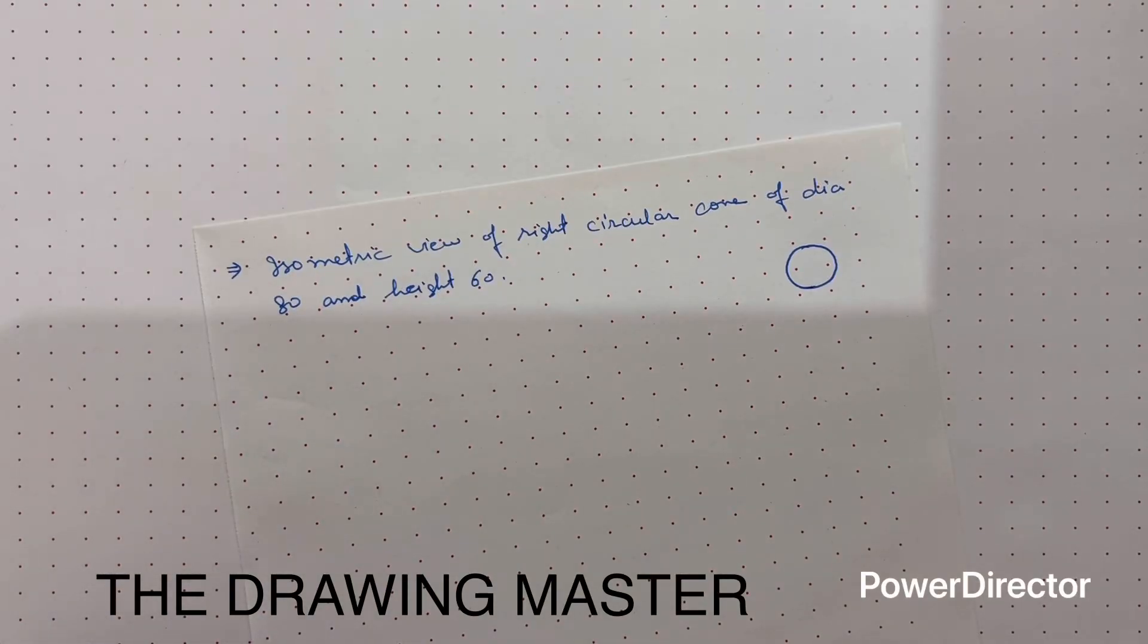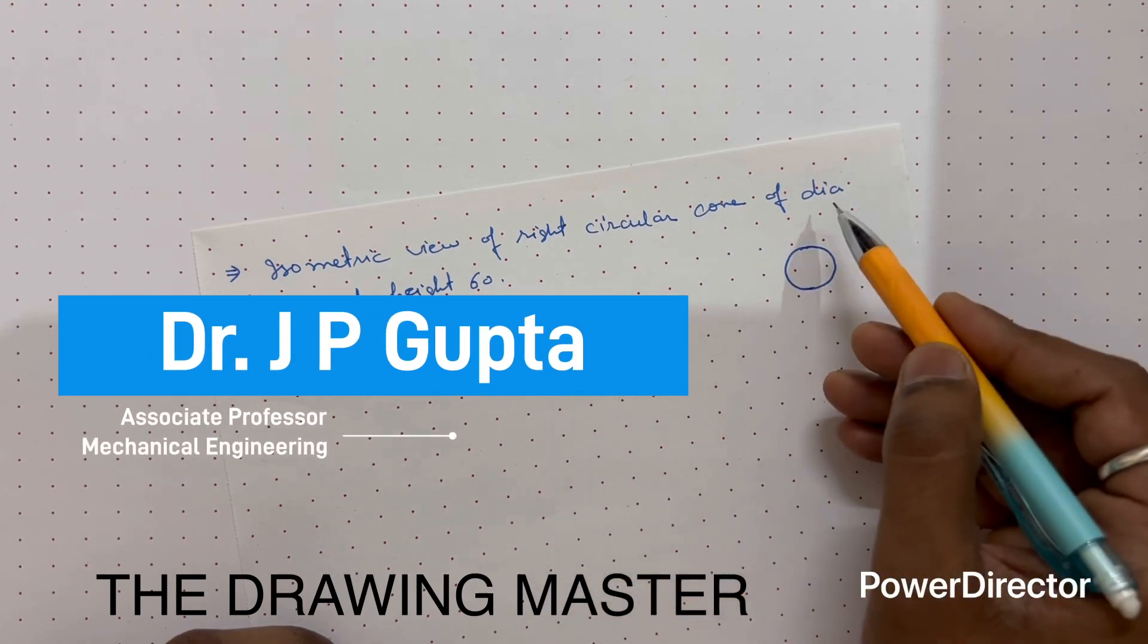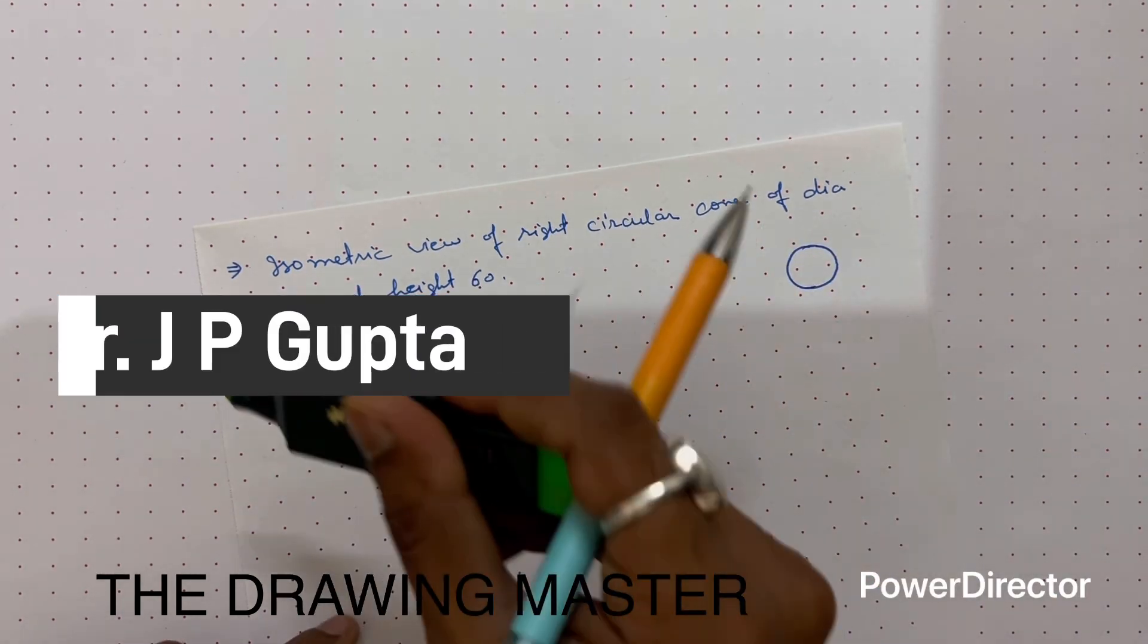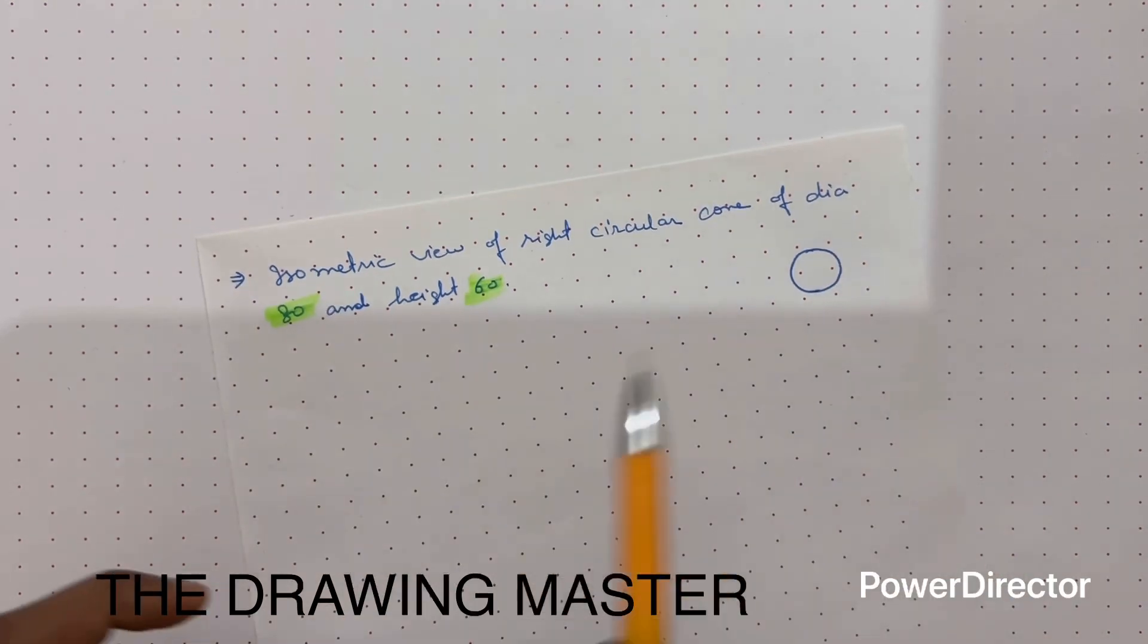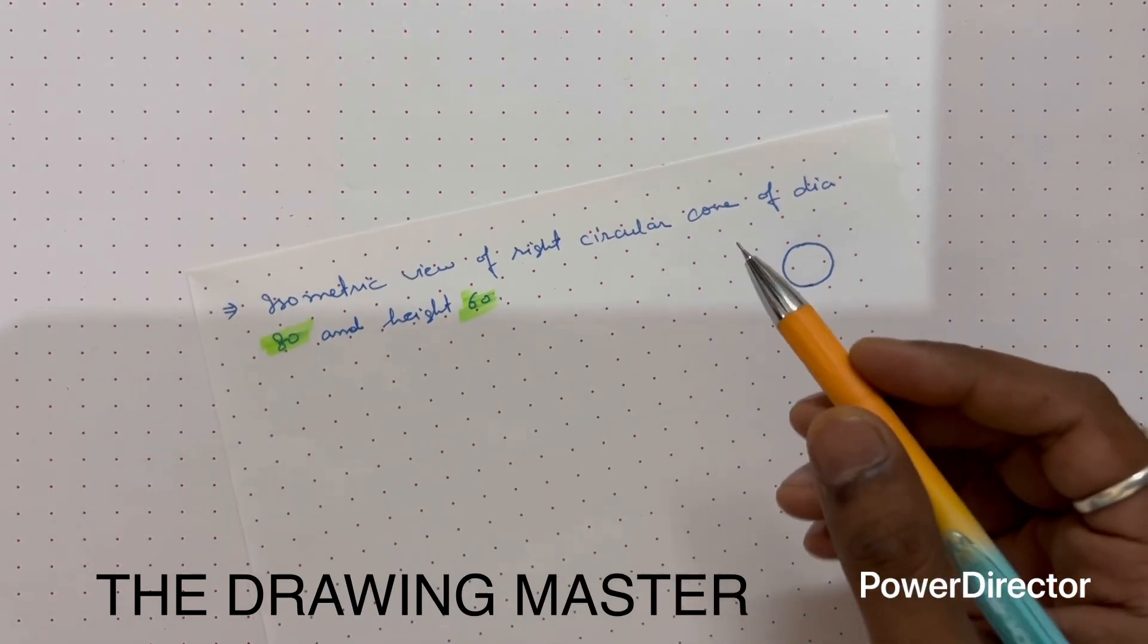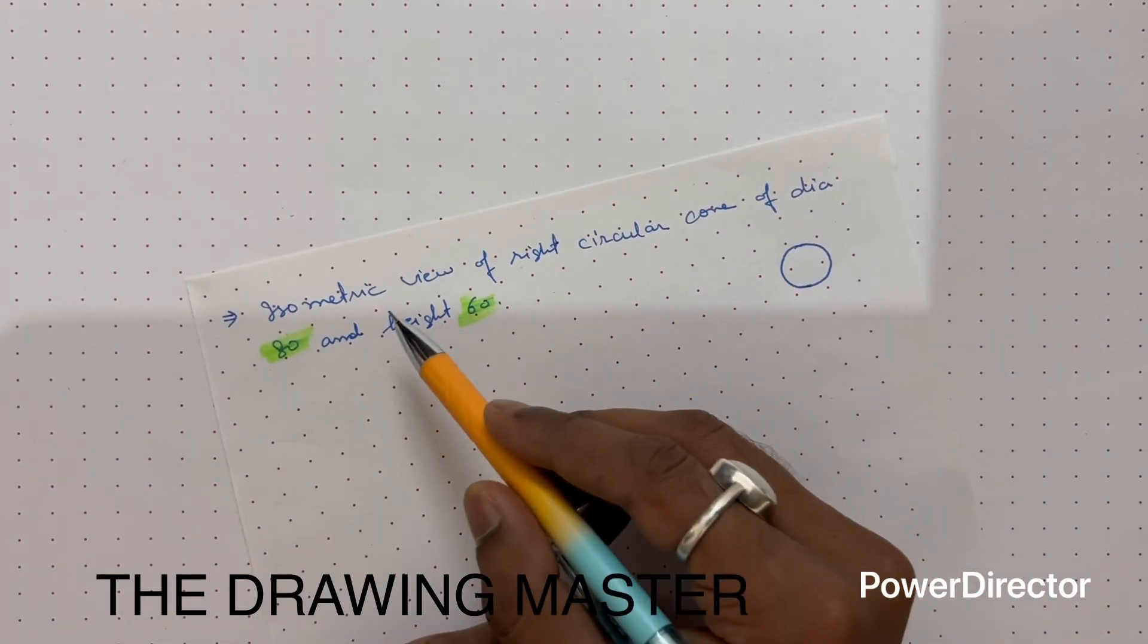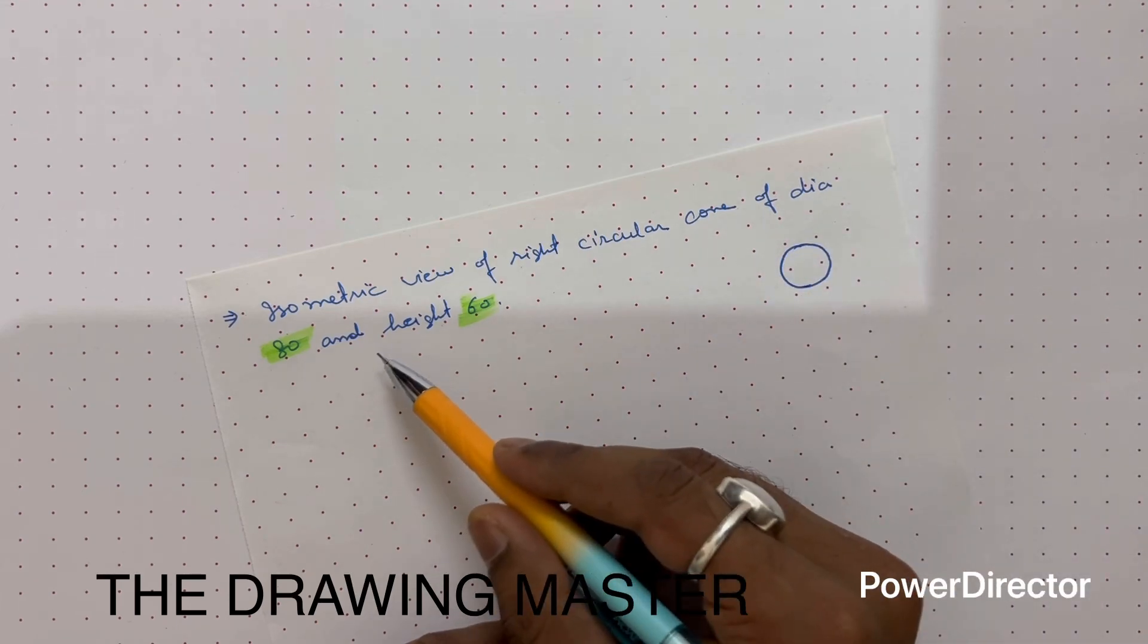Hello friends, in this video we will discuss isometric view of a right circular cone of diameter 80 and height 60. Right circular cone means the axis is perpendicular to the base.